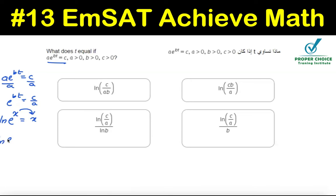So if you put it as ln e to the power bt equals ln c by a, then ln and e get cancelled out and it becomes bt equals ln c by a.